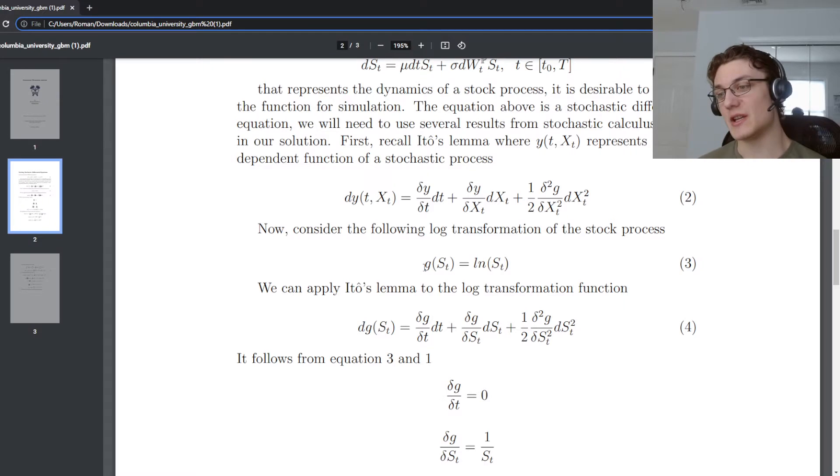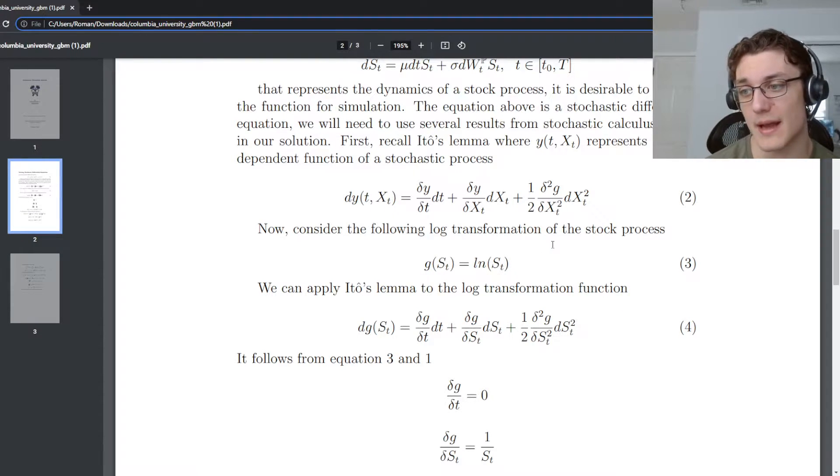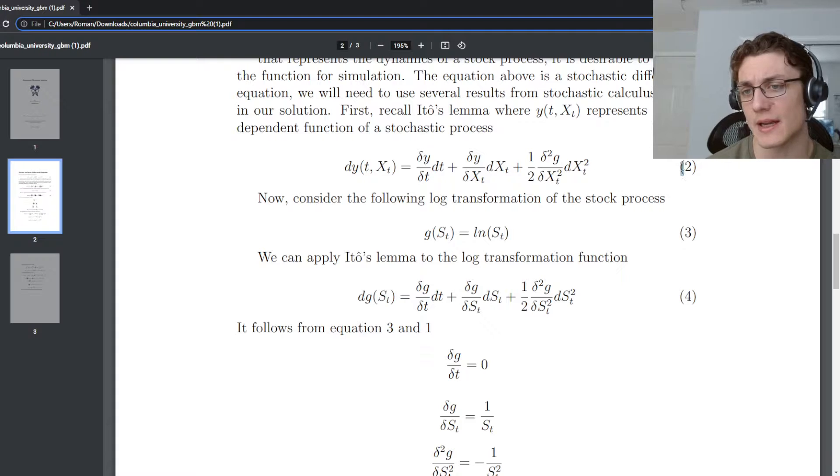If you'll notice, g of S of t, this function, is actually a time dependent function of a stochastic process, where the stochastic process is our stock price process. Therefore, we can apply Ito's Lemma. So essentially, we're taking equation two, and we're just substituting the stock price process everywhere we see x. You'll notice it's literally identical, except instead of x of t, you'll see S of t in all of these different spots.